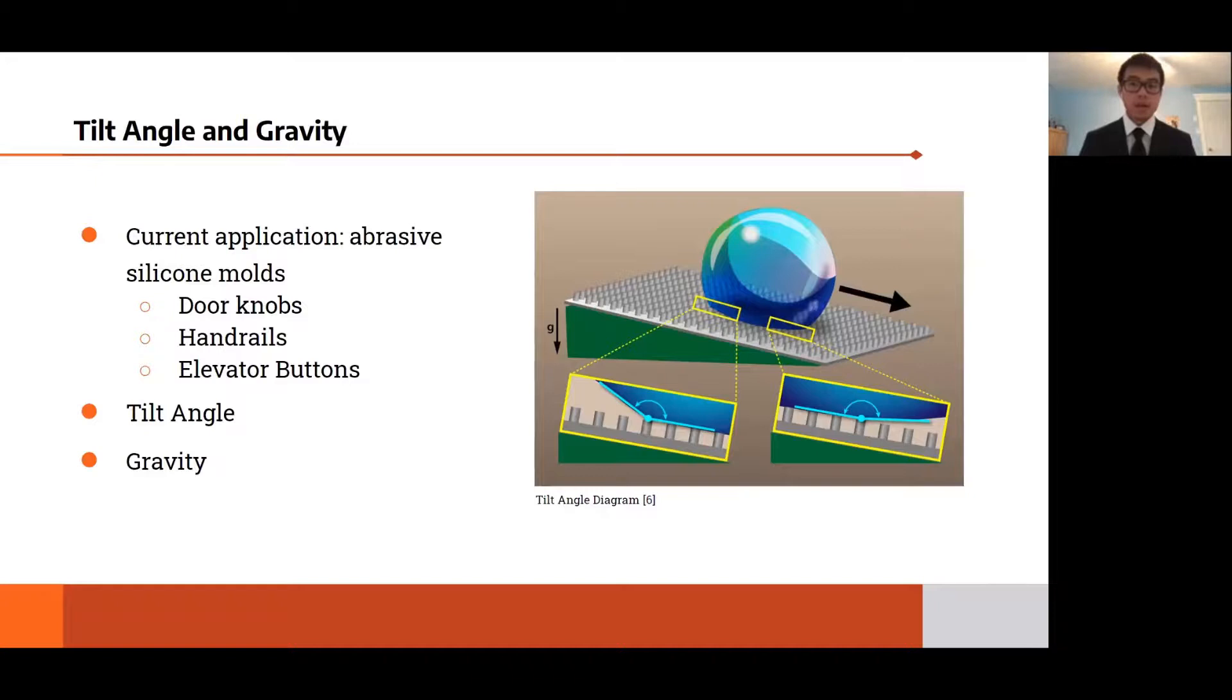Despite the fact that the impressions did not have any average contact angles near 150 degrees, the minimum for a surface to be superhydrophobic, the silicone impressions are still viable. Silicone impressions have a tilt angle, which is the minimum angle at which these particles fall off to the ground due to gravity. More hydrophobic surfaces will have smaller tilt angles.